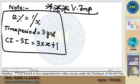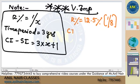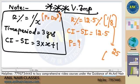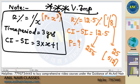Applying Method 2 to our question: R = 12.5% = 1/8, so x = 8. CI minus SI = 3×8 + 1 = 25, and this corresponds to a principal of 8³ = 512. Since the given CI minus SI is 12.5, which is half of 25, the answer is directly 512 ÷ 2 = 256.